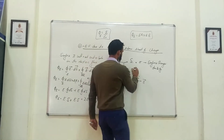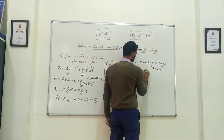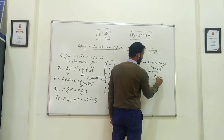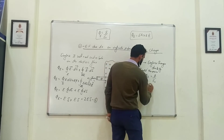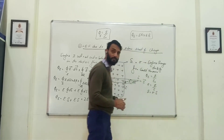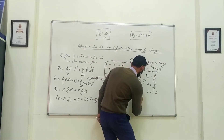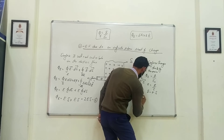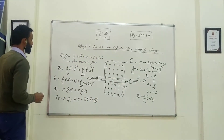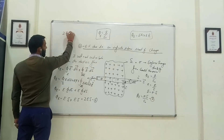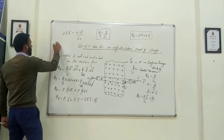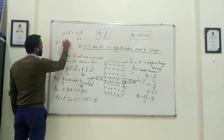Now from Gauss's theorem, we know that electric flux equals Q upon epsilon naught. We also know that sigma equals Q upon S, which means Q equals sigma times S. Substituting this, the electric flux equals sigma S upon epsilon naught. This is equation number 2. Comparing equation 1 and equation 2: 2ES equals sigma S upon epsilon naught. Therefore, the electric field E equals sigma upon 2 epsilon naught.